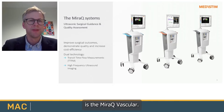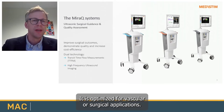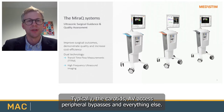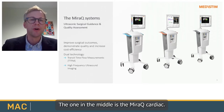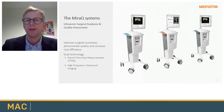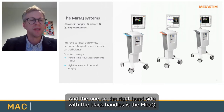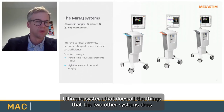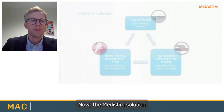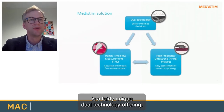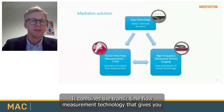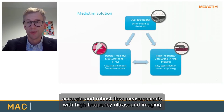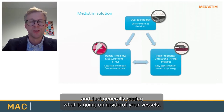The first one with the blue handles is the MiraQ Vascular, optimized for vascular surgical applications, typically the carotids, axial vessels, peripheral bypasses, and everything else that might be interesting. The one in the middle is the MiraQ Cardiac, optimized for cardiac surgery. The one on the right with the black handles is the MiraQ Ultimate system that does all the things the two other systems do. The MediStim solution is a fairly unique dual technology offering, combining transit time flow measurement technology — which gives accurate and robust flow measurements — with high-frequency ultrasound imaging, very good at assessing vessel morphology.